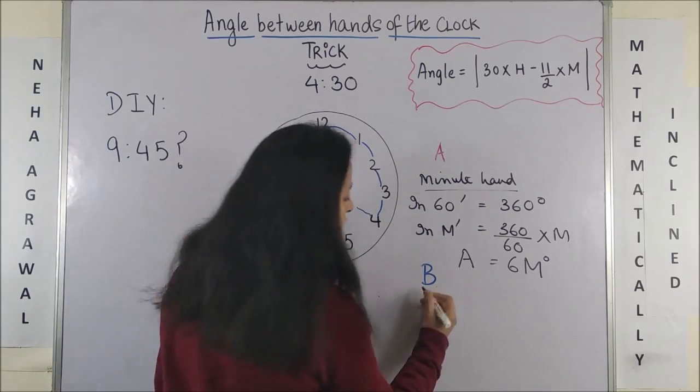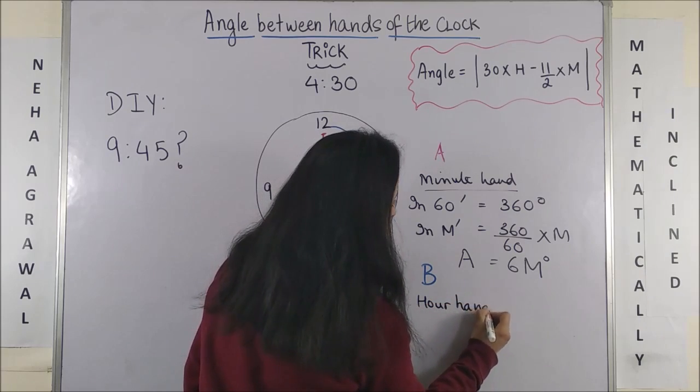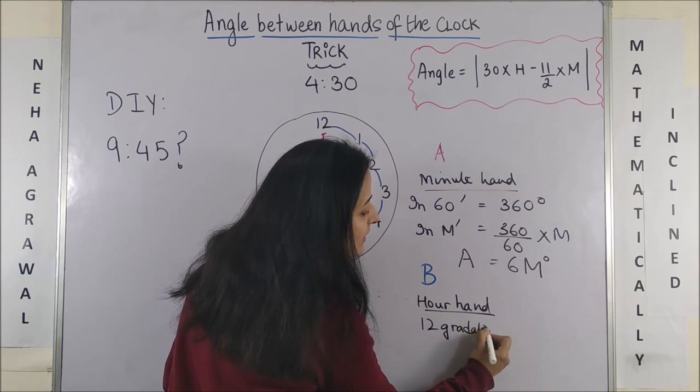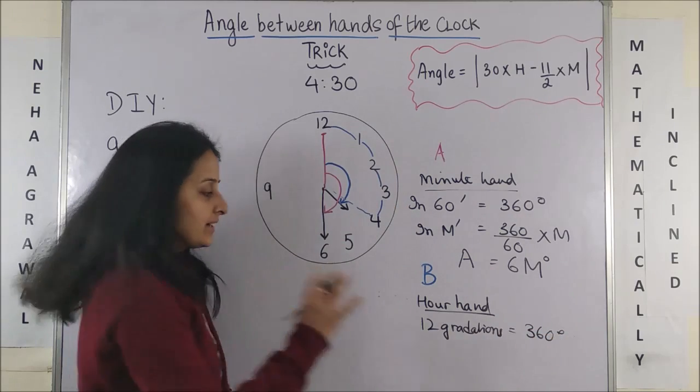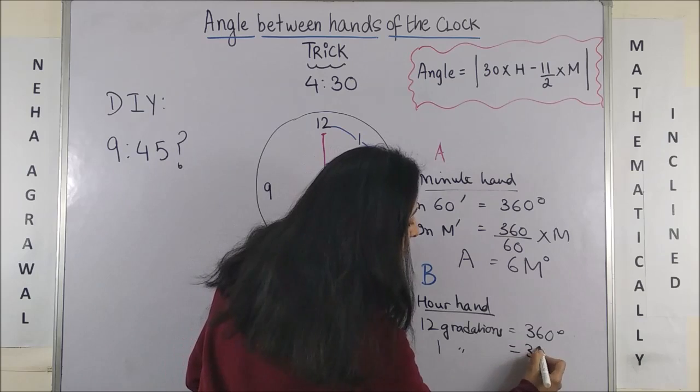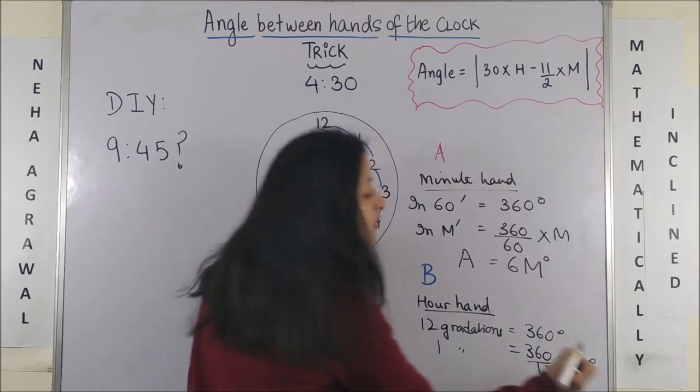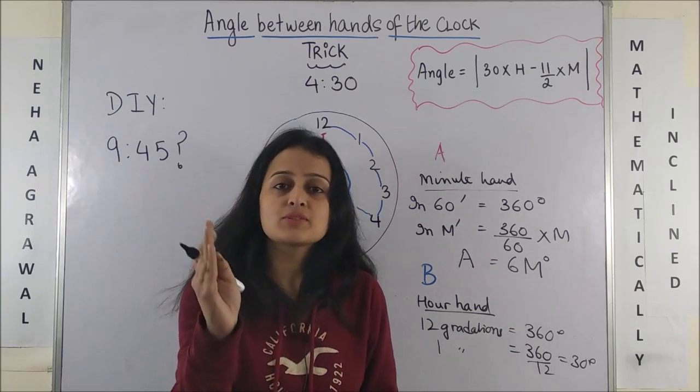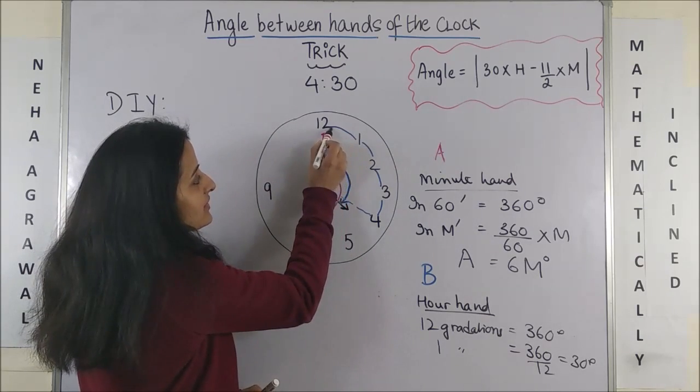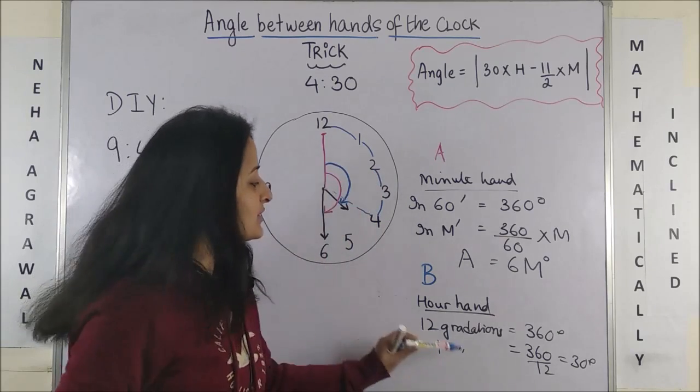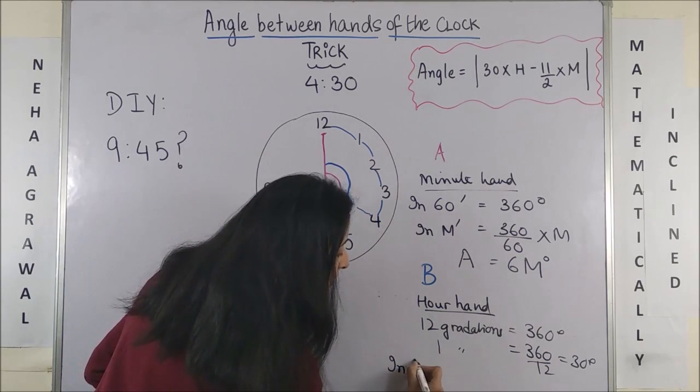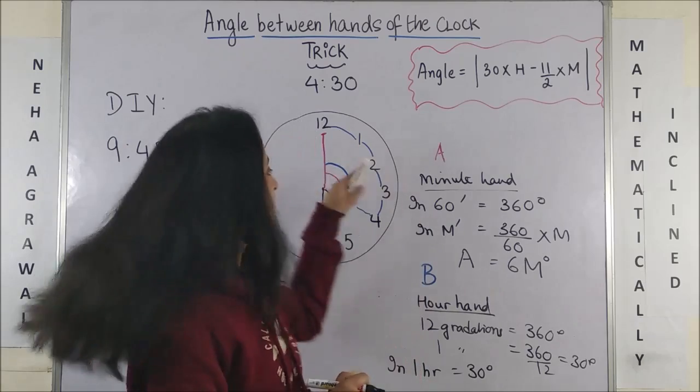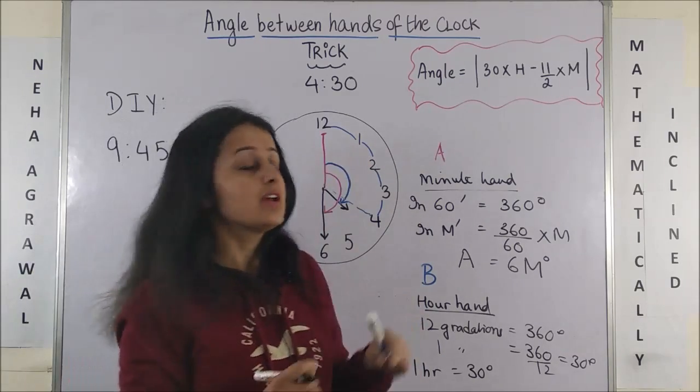So first of all, talking of your hour hand, the simple logic says that 12 gradations or these 12 numbers, they cover the entire 360 degrees. So that means 1 gradation covers 360 by 12 which is 30 degrees. What do I mean by this 1 gradation? That means when, suppose it was 12 o'clock, next time it's 1 o'clock, next time it's 2 o'clock. So basically, our hand is only moving this much each time.